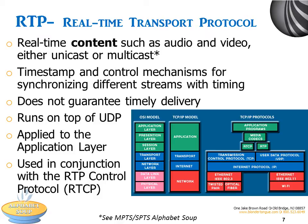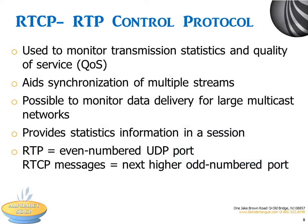RTP runs on top of UDP and belongs to the application layer. It combines its data transport with a control protocol, RTCP. While RTP carries the media streams — that is, audio and video — RTCP, or the RTP Control Protocol, is used to monitor transmission statistics and quality of service, or QoS. It aids synchronization of multiple streams and makes it possible to monitor data delivery for large multicast networks. The primary function of RTCP is to provide feedback on the QoS in media distribution by periodically sending statistics information to participants in a streaming multimedia session.